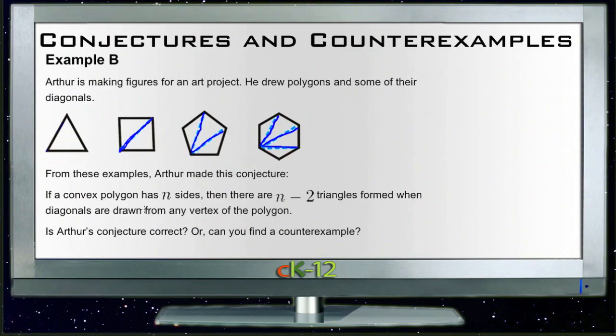So from his examples, Arthur figures that if a polygon has some number of sides, then there are going to be n minus 2 number of triangles formed when diagonals are drawn from any vertex of the polygon. So if it has three sides, then there'd be 3 minus 2, which would be one triangle. If it has four sides, then there'd be n minus 2 or two triangles. Five sides would be three triangles. Six sides would be 6 minus 2 is 4. So it looks like his conjecture is correct. All the evidence that we have shows that his conjecture is correct.